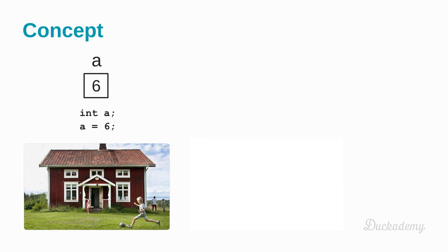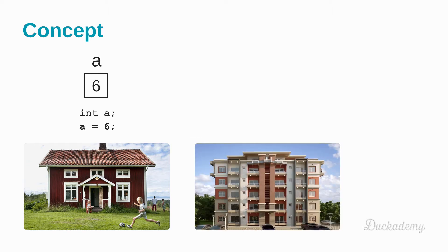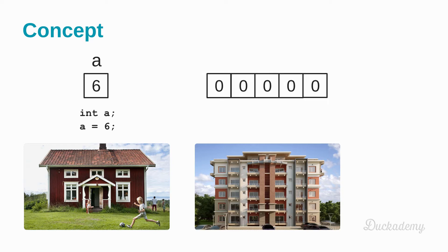But there are other houses that contain lots of flats, and each flat contains one family. These flats are numbered from, for example, 1 to 25. In Java, these can be variables that hold multiple values next to each other in one variable.